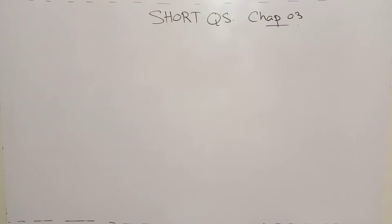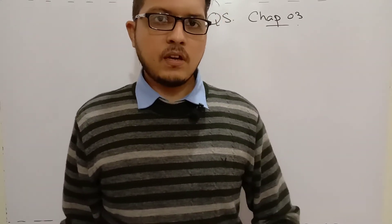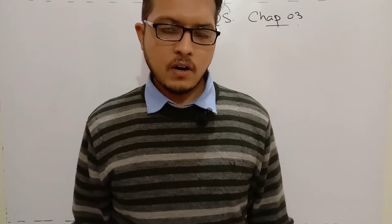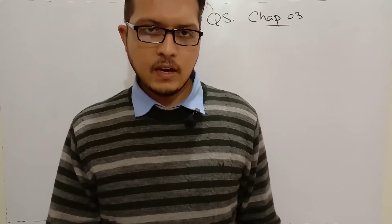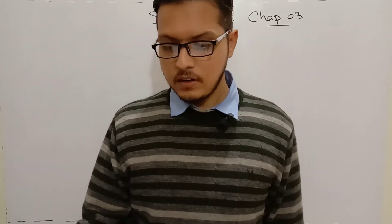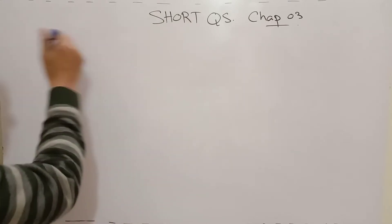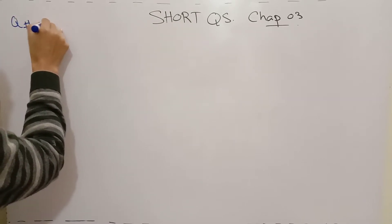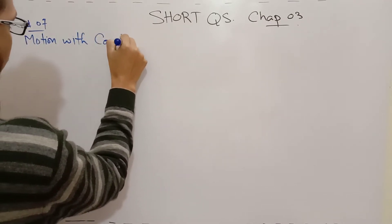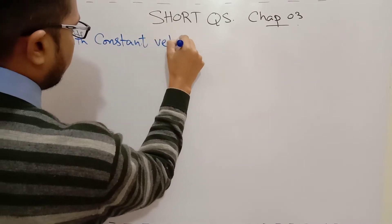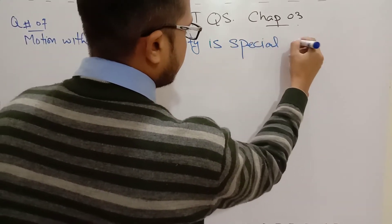Hello and welcome everybody. Today we have a short question remaining in chapter number 3. We read the last lecture up to question number 6, so from question number 7 we have to start. In question number 7 we have a statement we have to explain and tell if it is correct or wrong. The statement is: Motion with constant velocity is a special case of motion with constant acceleration.